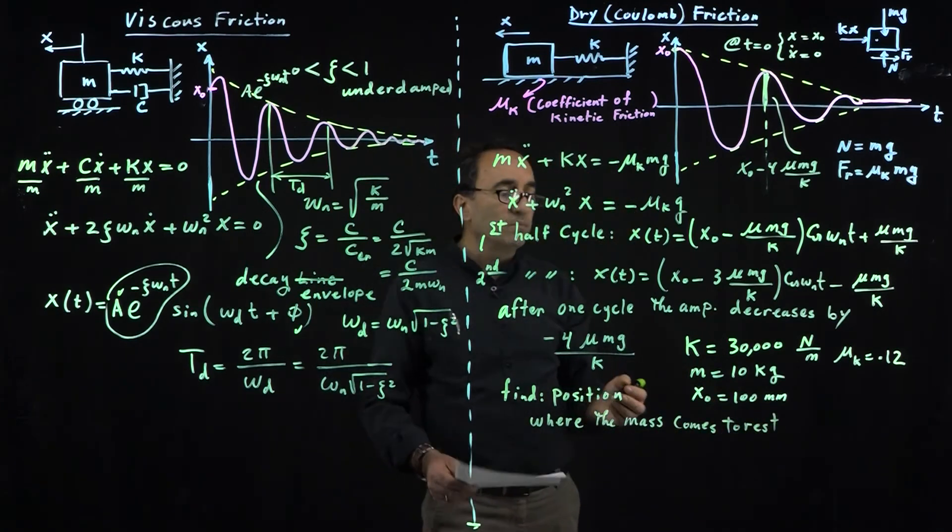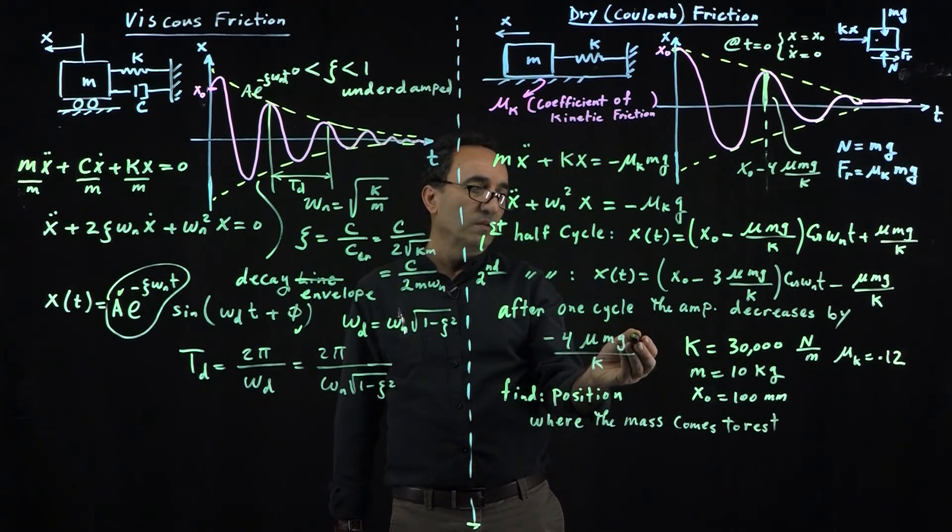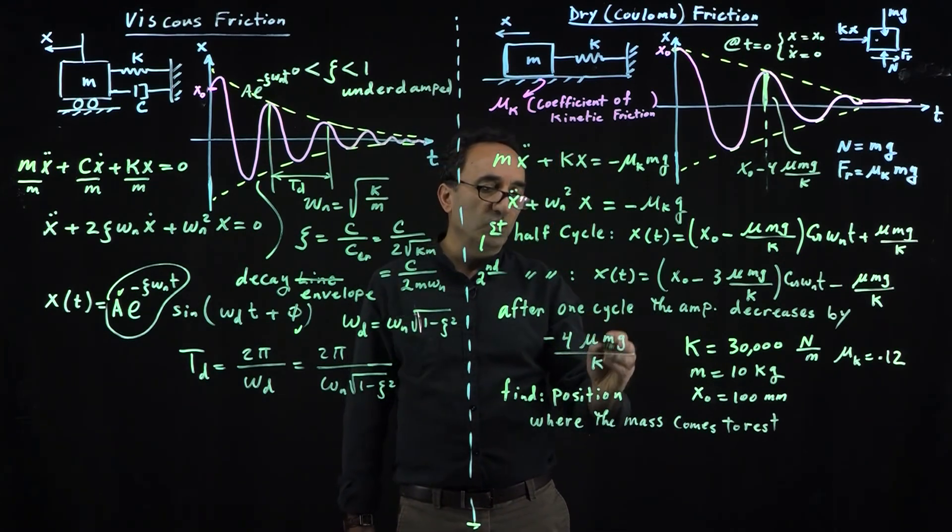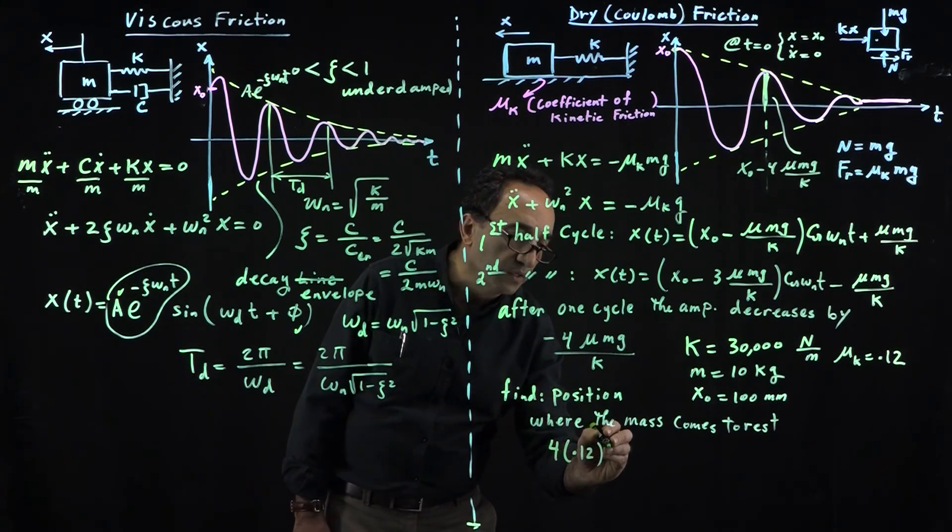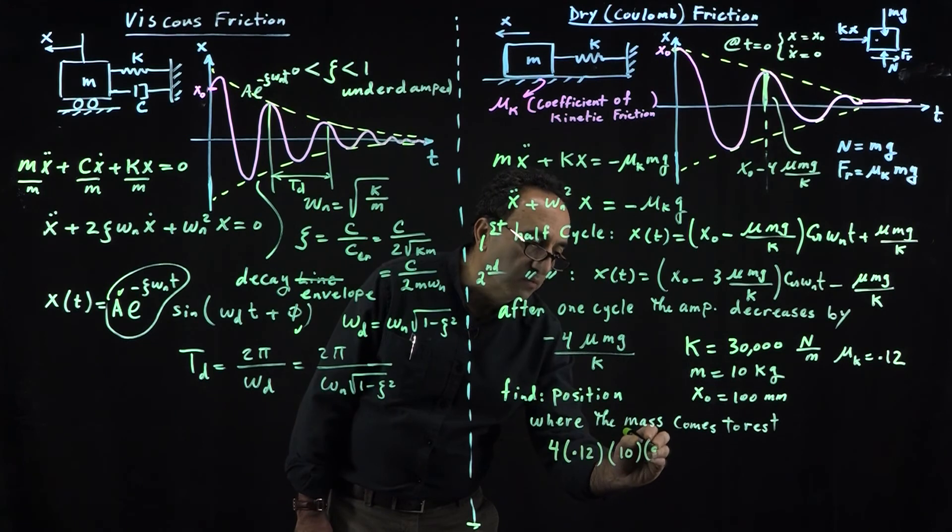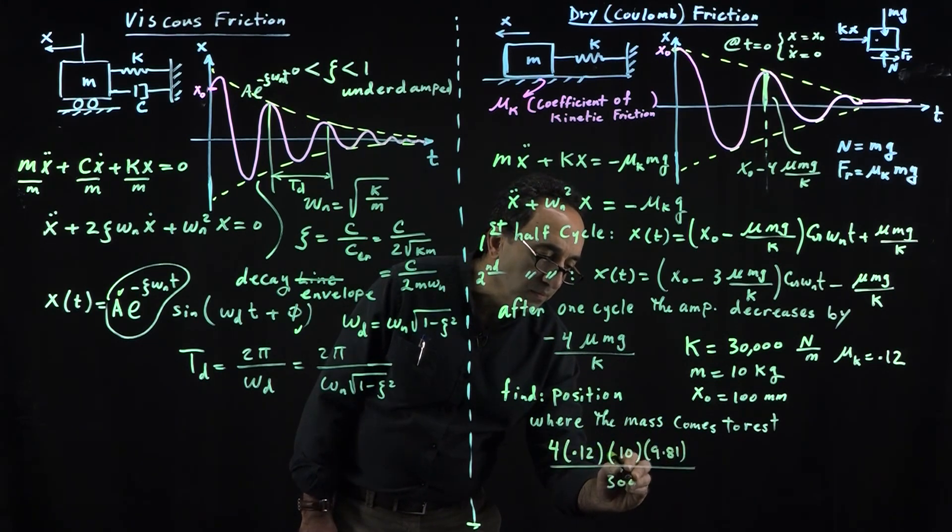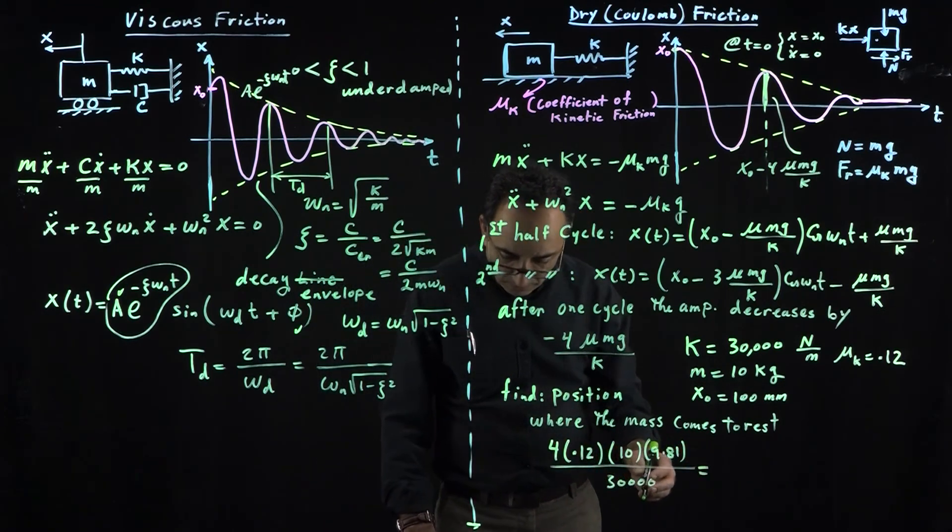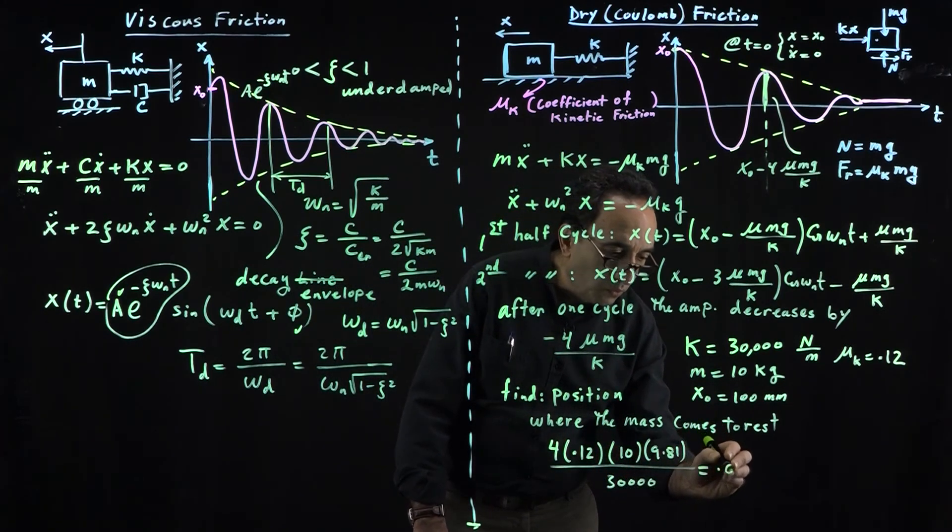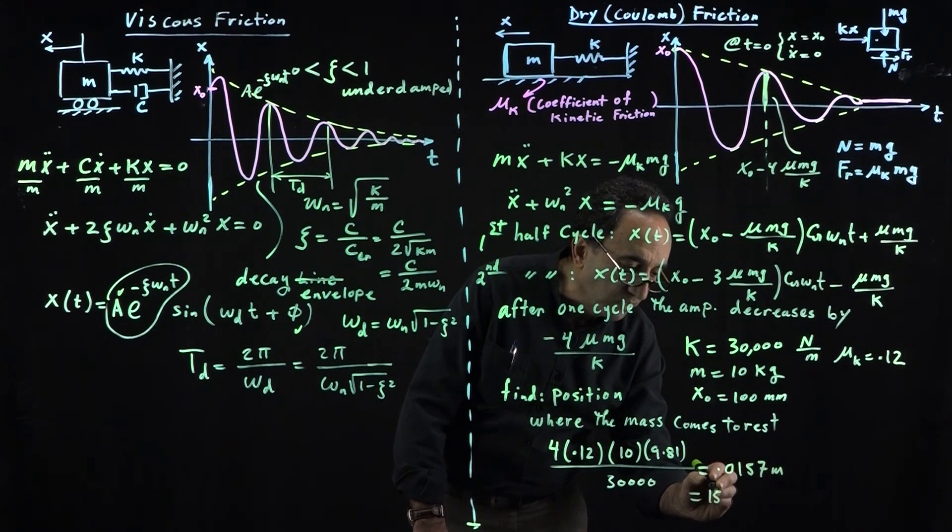This is a very simple problem. All we have to do is calculate 4 mu mg over k. If we plug in 4 times 0.12 times mass of 10 times 9.81 divided by 30,000, this comes out to 0.0157 meters, which is 15.7 millimeters.